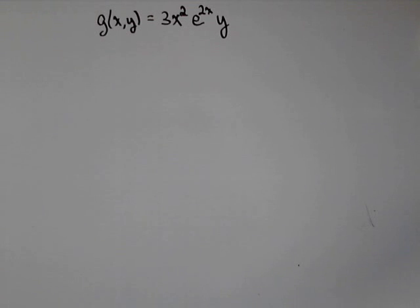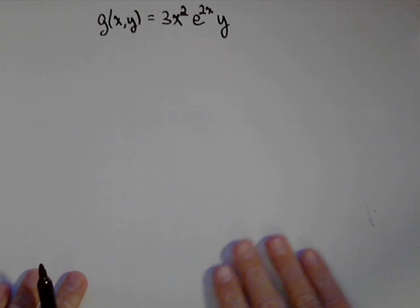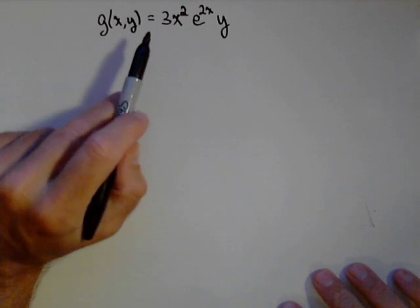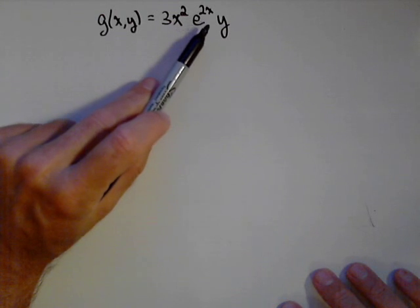So in this video we're going to look at calculating some partial derivatives of some functions just to get a little bit of practice. We have g(x,y) = 3x² e^(2xy).